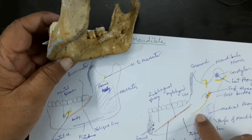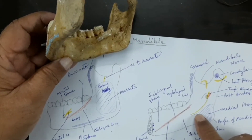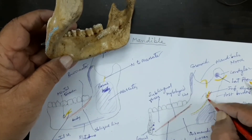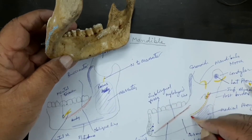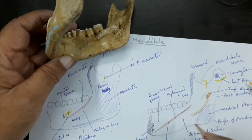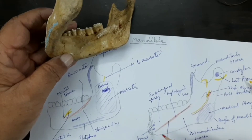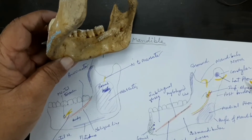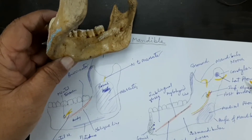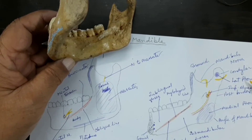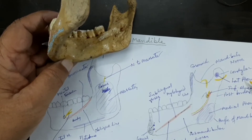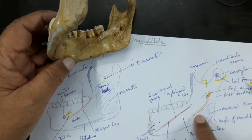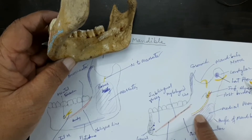Before going into the foramen, the inferior alveolar nerve and artery give a branch which runs into the mylohyoid groove. Don't confuse this groove with the mylohyoid line — this is a groove and they run in the groove right up to the anterior end. This is the mylohyoid nerve and artery. So from the inferior alveolar nerve and artery, the mylohyoid nerve and artery arise and run into the mylohyoid groove.